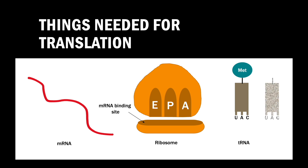There are two types of tRNA. We have charged tRNA — in other words, tRNA carrying an amino acid — and we have empty or uncharged tRNA. There is a specific region in the tRNA called the anticodon. The anticodon matches perfectly with the codon present on the mRNA, and a tRNA with a specific anticodon will carry a specific amino acid.